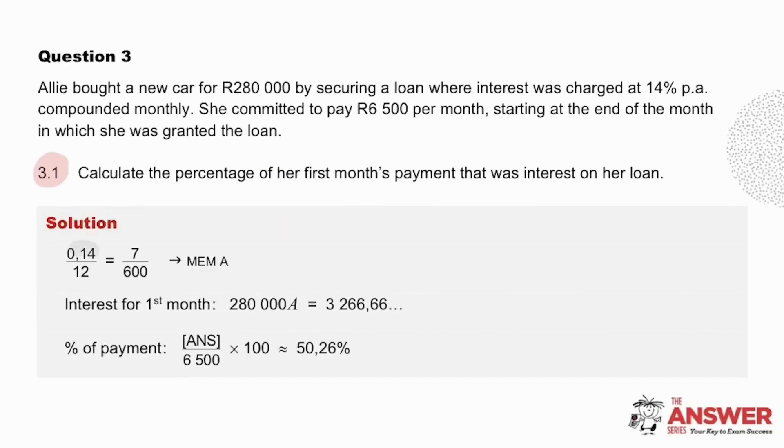Hopefully you're in a good habit now of putting the interest rate for the time period in the memory. Then the first step here is to calculate the interest for the first month. We do this by multiplying the value saved in A by the original loan amount and this comes to 3,266.66. To work out what percentage this is of the monthly payment we must divide this by the 6,500 and then multiply by 100. The answer of 50.26% tells us that just over half of that monthly payment was interest.